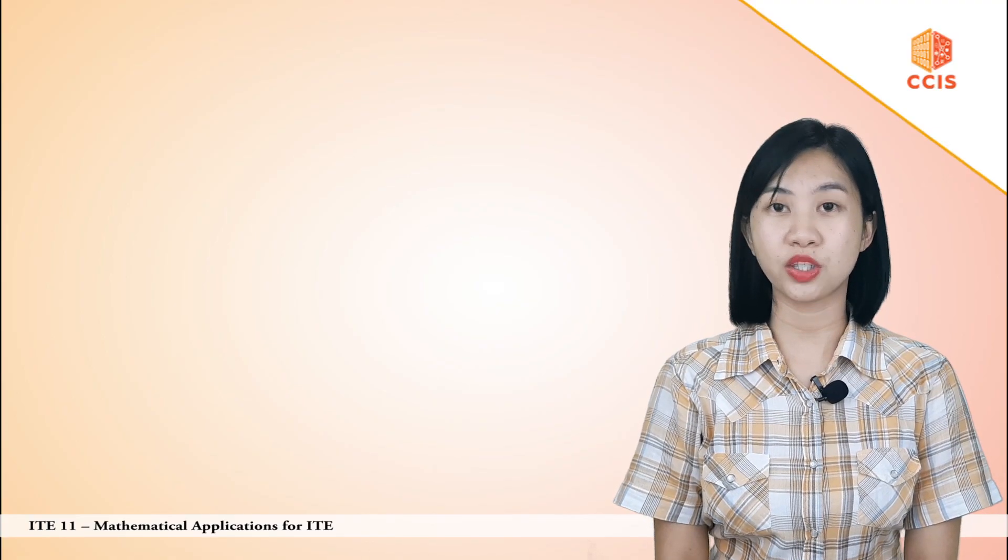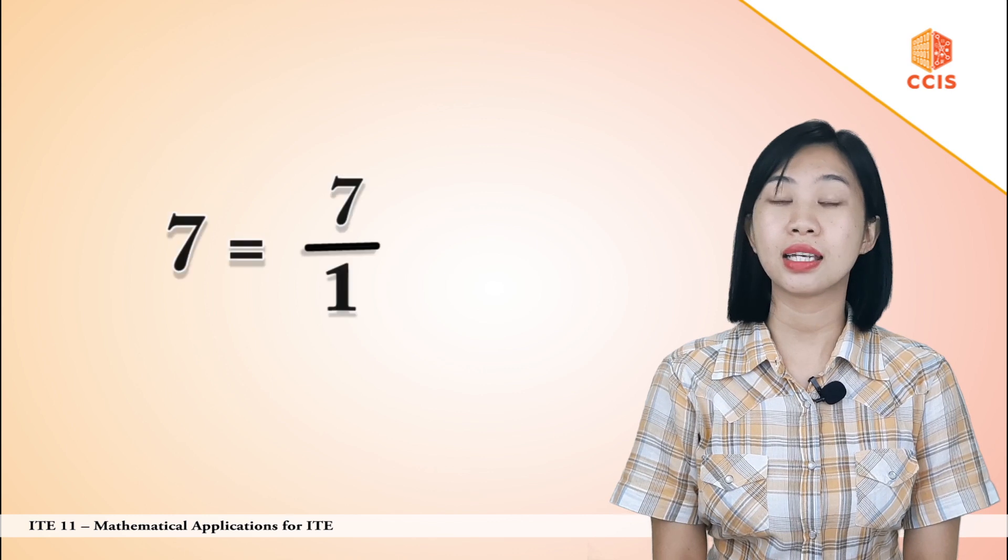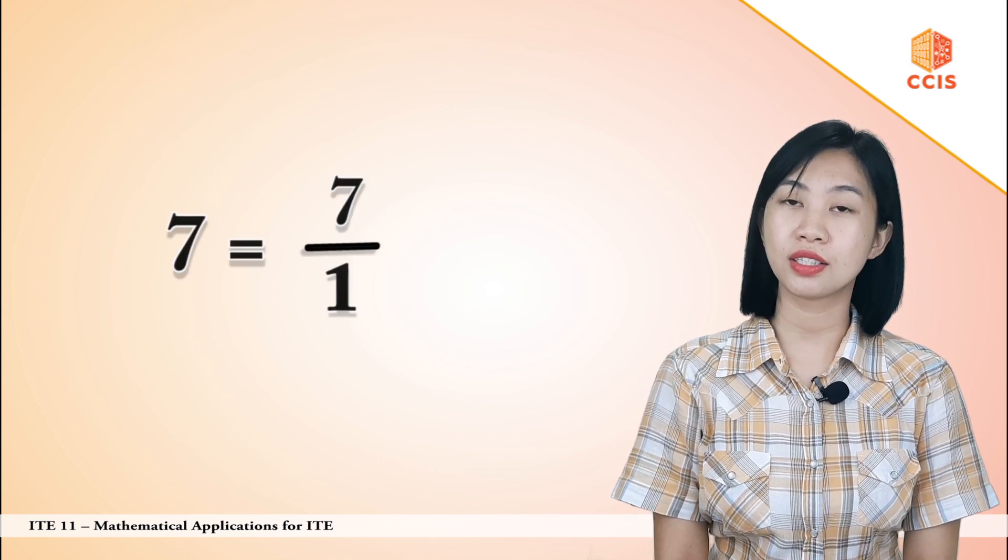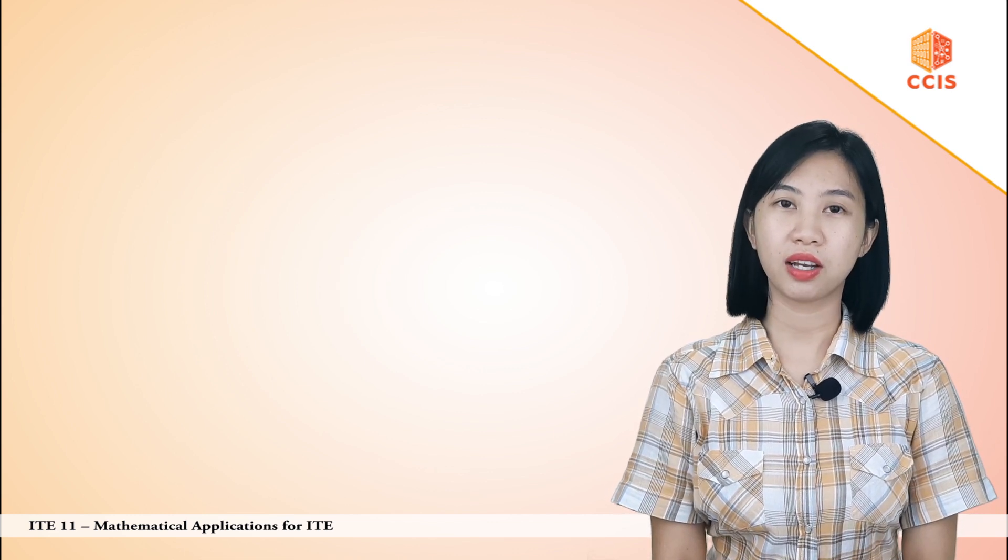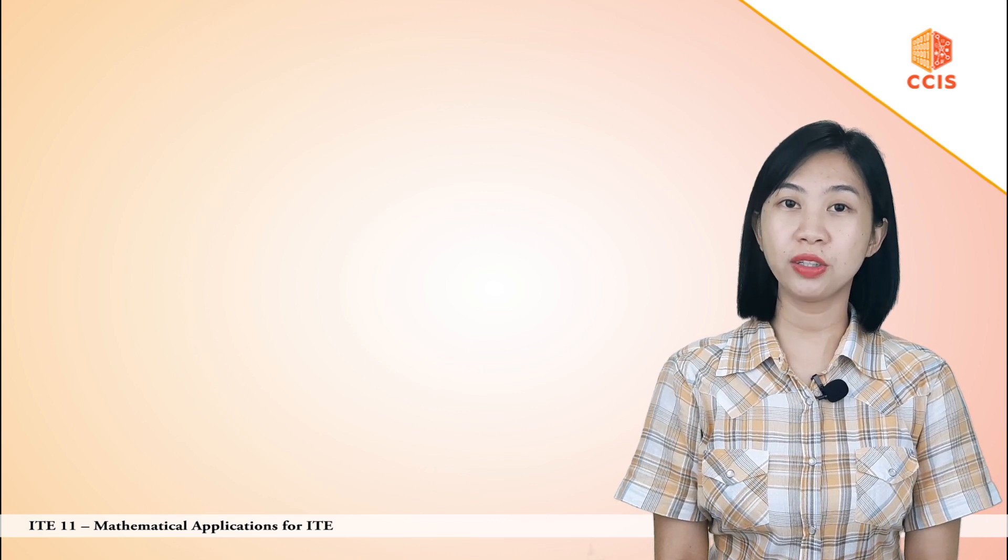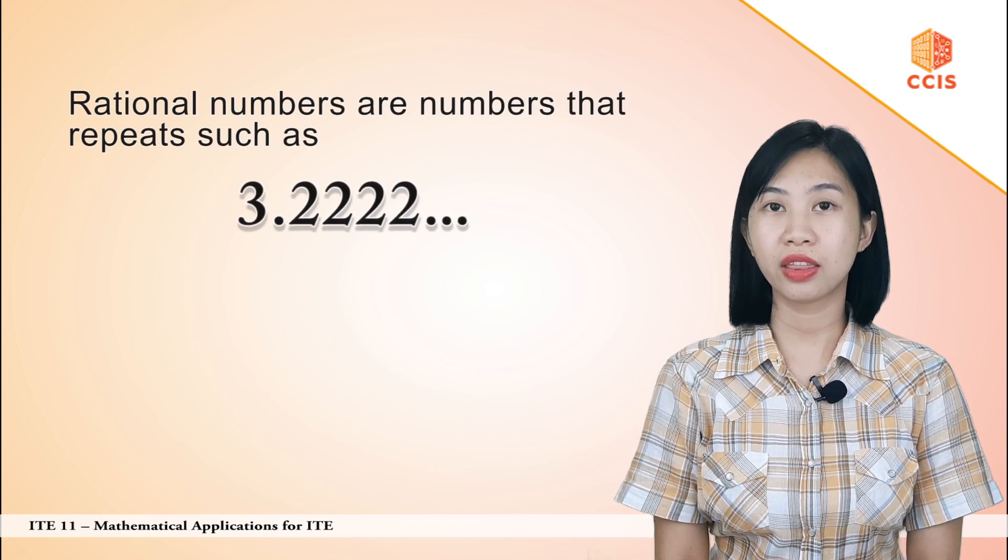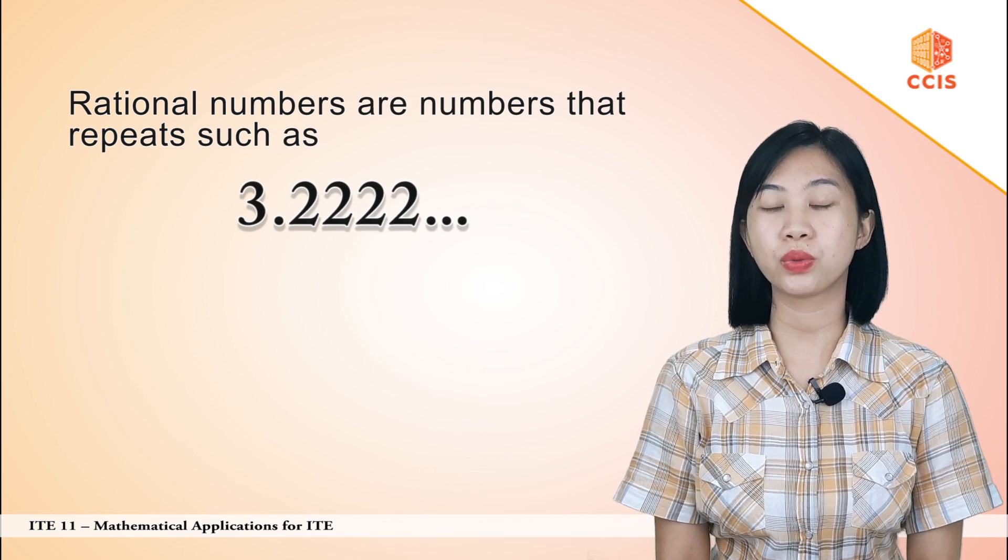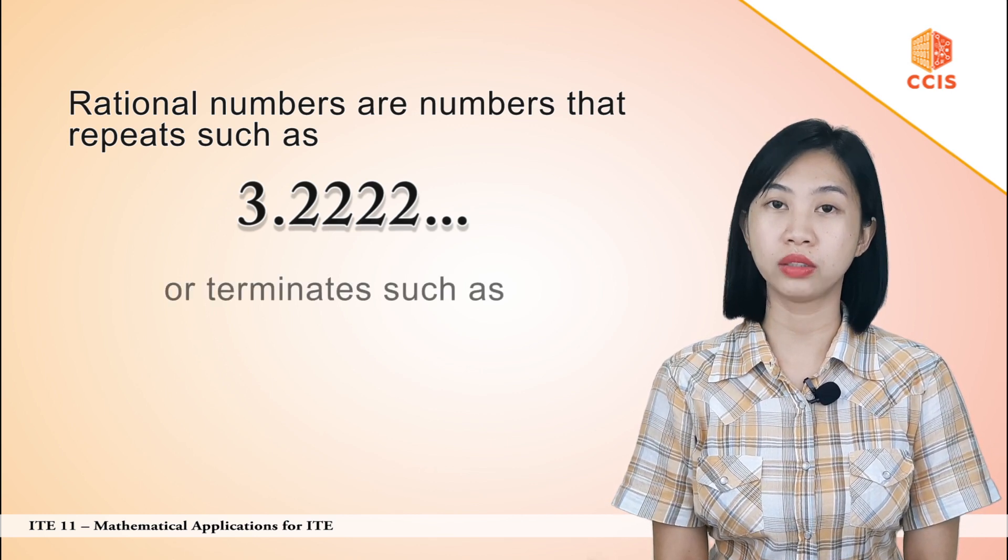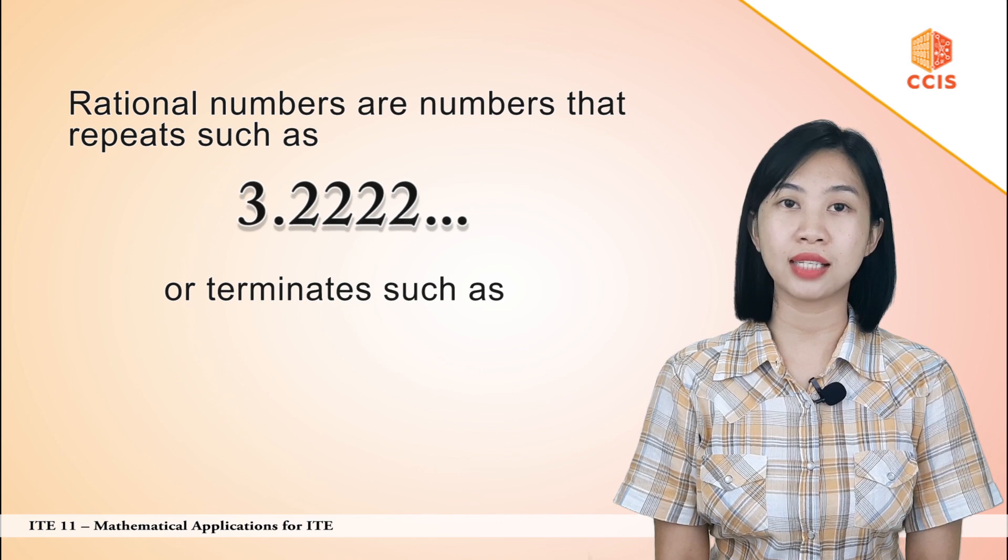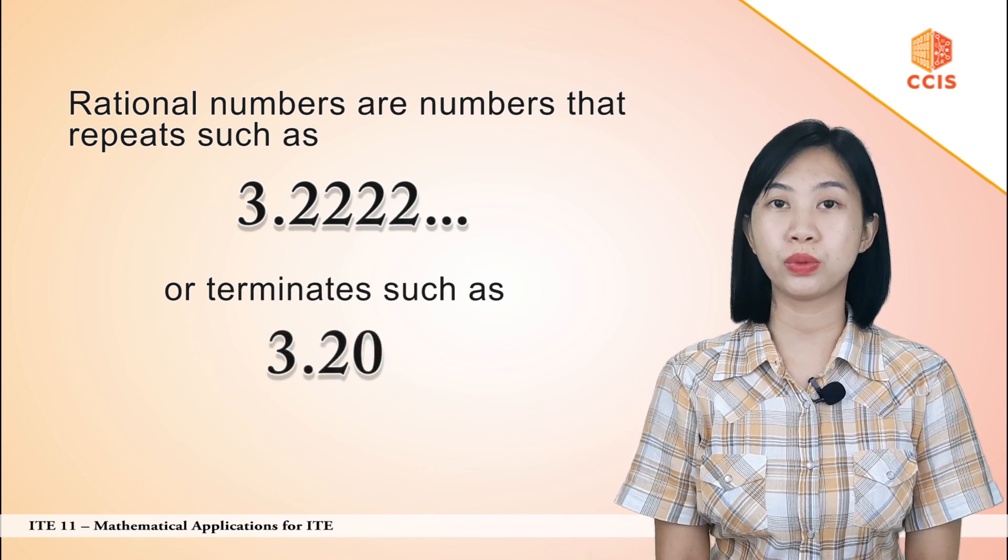So 7 is a rational number since it can be represented as 7 over 1. In general, rational numbers are those numbers that repeat such as 3.2, 2, 2, and so on, or terminate such as 3.20.